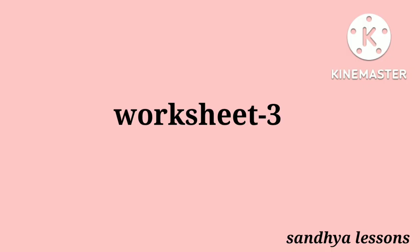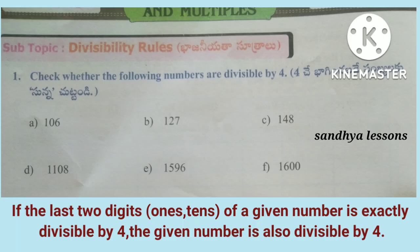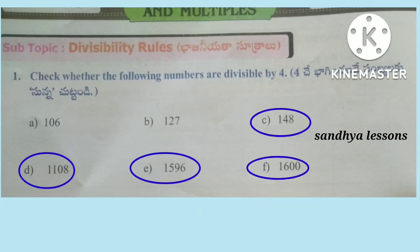Worksheet 3, First Roman: Check whether the following numbers are divisible by 4. Divisibility rule of 4 is: if the last two digits of a given number are exactly divisible by 4, then the given number is also divisible by 4. The numbers 148, 1108, 1596, and 1600 are divisible by 4.